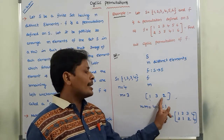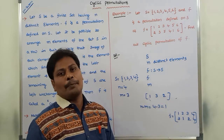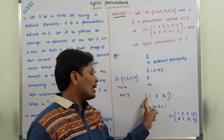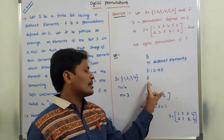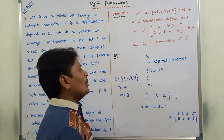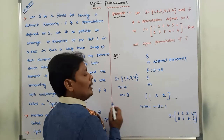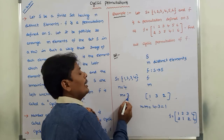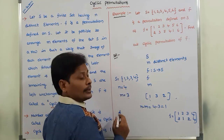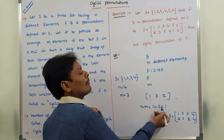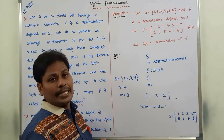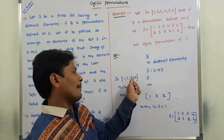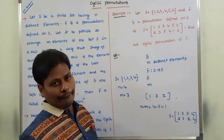That means: 1's image is 3 because 3 follows 1; 3's image is 2 because 2 follows 3. The image of the last element in the row is the first element — that means 2's image is 1. In the set there are 4 elements, in the row only 3 elements, so m equals 3. The remaining n minus m equals 4 minus 3 equals 1 element is element 4, and 4's image is also 4.